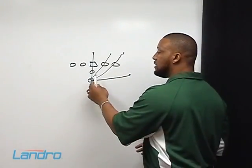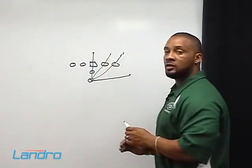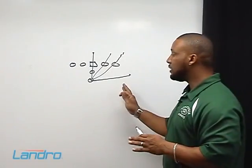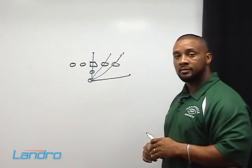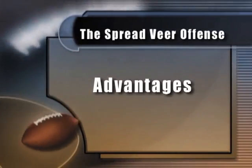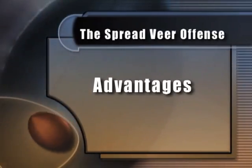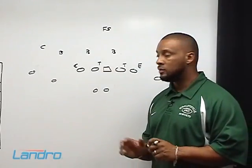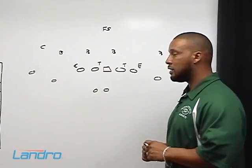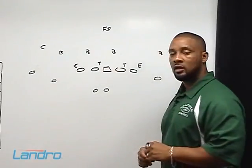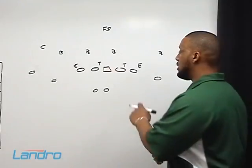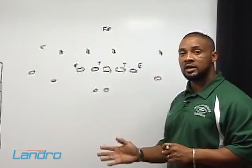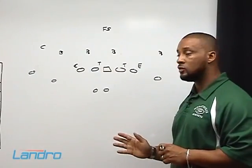That way you can attack the defense from inside out. So wherever they're giving you pressure, wherever they're creating problems on defense, you have a play that you can check to and still have a successful team. Now we're going to talk about the advantages of using the midline and the speed option. First of all, when you have a small offensive line — guys under 200 pounds at offensive guard and tackle playing against guys that are 270 to 280 pounds — it allows us to read these guys and not block them. So if we make good decisions, we can still be successful.